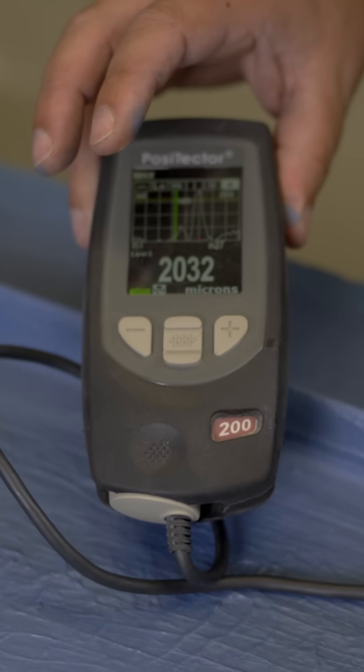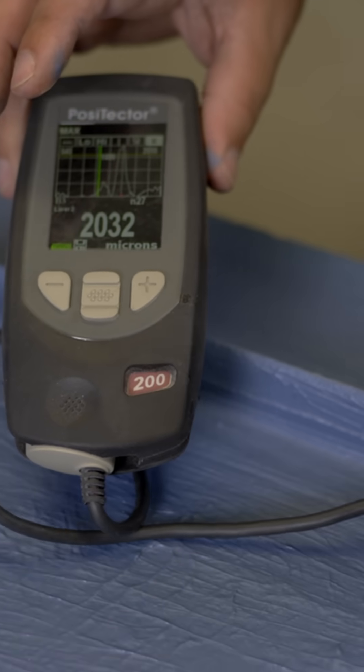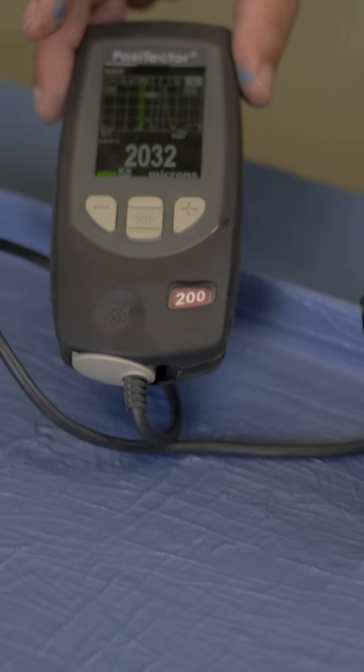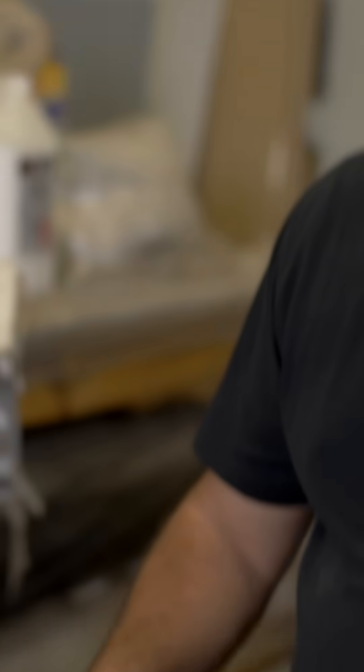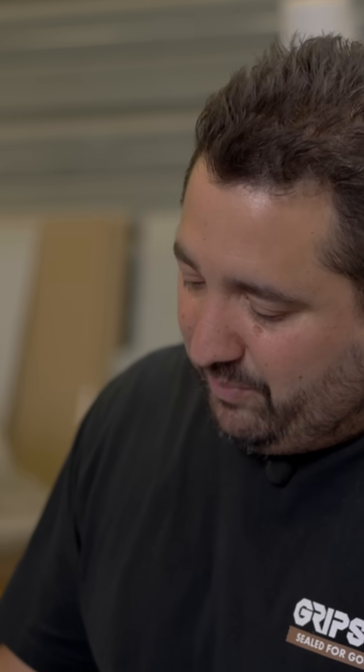These machines do need to be calibrated; they are quite sensitive. To be completely fair, they should probably be treated more as an indicative thickness than a completely accurate reading of what that thickness is. There's a lot of things that can actually affect this piece of apparatus as far as consistency.